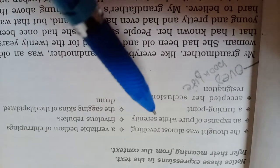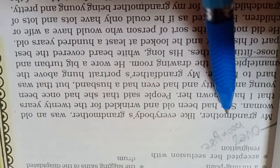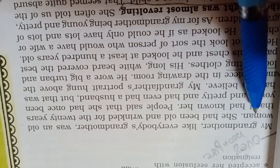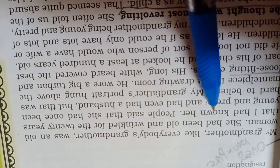Let's have a look at the text. In the very beginning, these expressions are used in the chapter and are bolded to show different meanings. My grandmother, like everybody's grandmother, was an old woman. She had been old and wrinkled for the twenty years that I had known her.